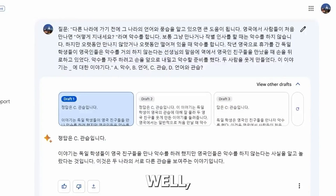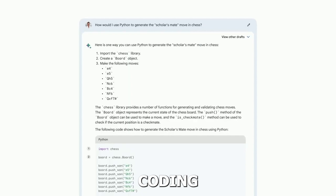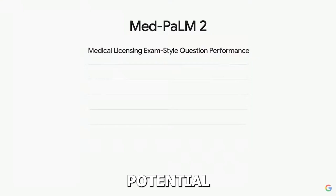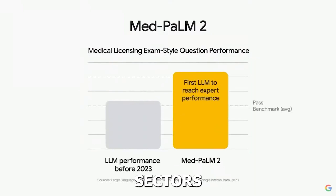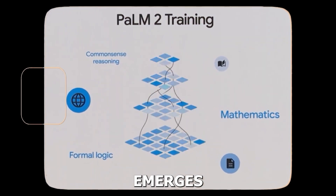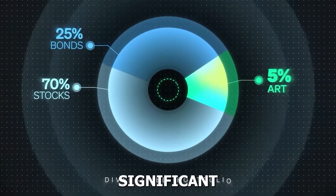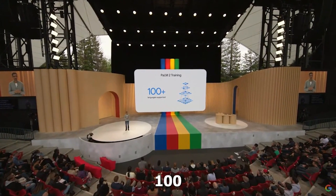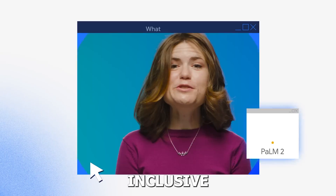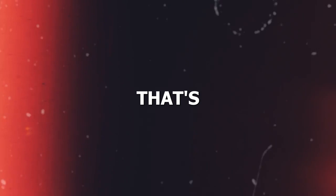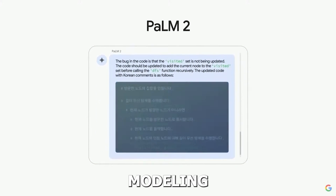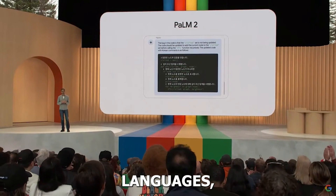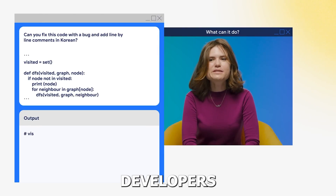Palm 2's advancements in language support, coding abilities, and its specialized healthcare application MedPalm 2 demonstrate the immense potential of large language models across various sectors. Trained on diverse datasets, Palm 2 emerges as a powerful successor to Palm, bringing significant improvements and enhanced language support. With expanded language capabilities covering over 100 languages, Palm 2 opens doors to more inclusive and diverse applications. It also transcends language modeling to embrace coding, enabling it to code in multiple languages — making it a versatile tool for developers and programmers.